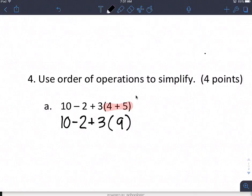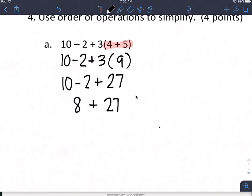The next thing would be multiplication or division. The only multiplication that I have is that 3 times 9, so I need to do that first. 3 times 9 is 27. And then I'm looking for addition and subtraction. I need to go left to right. So 10 minus 2 is 8, 8 plus 27 would be 35.